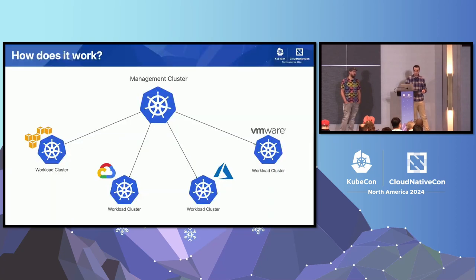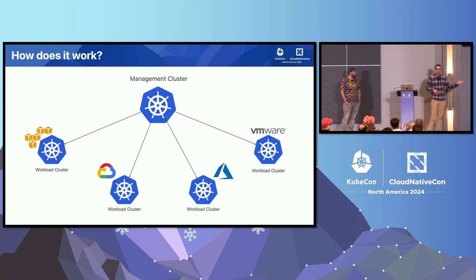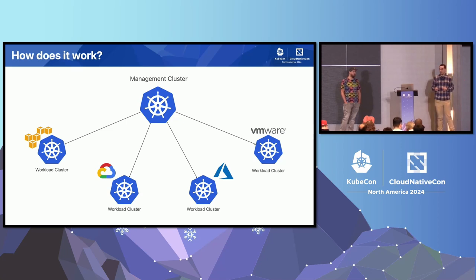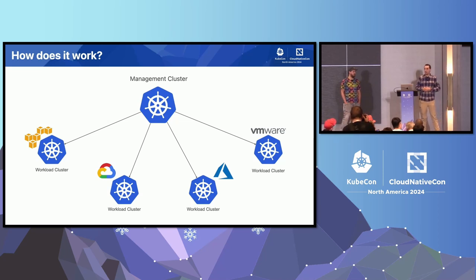So how does it work? You have a management cluster that can manage all of the other clusters. The goal is to make sure that you can span all your cloud providers, so you can really be agnostic. There will be differences between how these providers behave, but we have contracts in place and run conformance for Cluster API itself, so that base operations like scaling up node pools and auto-scaling behave exactly the same across clouds and bare metal.